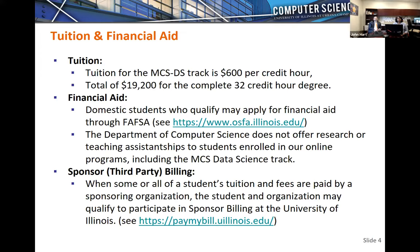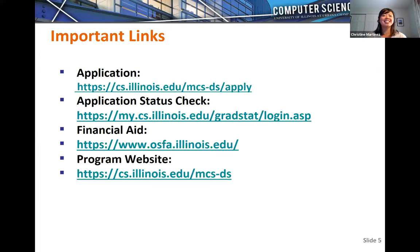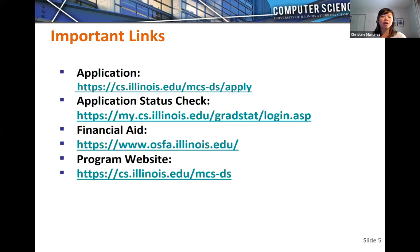For important links: the application can be found at the first link on the program website. You can check the status of your application once submitted by logging back into the same application link. The financial aid link and program website are also listed. That concludes the slide deck.